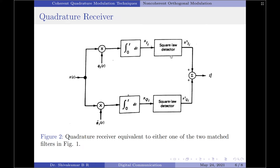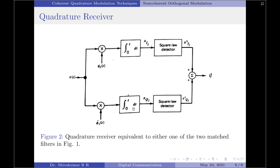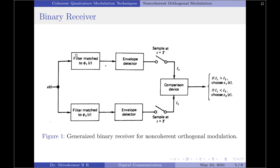These correlator outputs are then given to square-law detectors that square the values to create xᵢᵢ² and x_Qi² as in-phase and quadrature phase channel outputs respectively. These squared values are then added to create the receiver output Lᵢ², as per the equation Lᵢ² = xᵢᵢ² + x_Qi². The variable L here represents the amplitude of the transmitted signal.